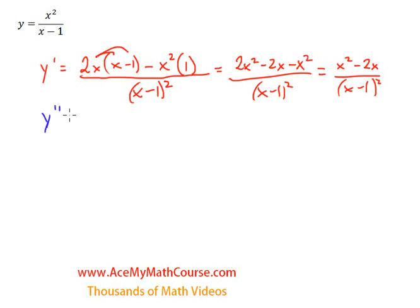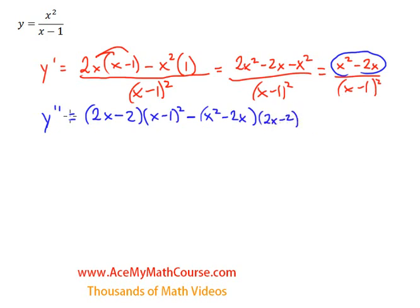y double prime is equal to, now this will be super fun, we need to take the derivative again and the derivative of the top function will be 2x minus 2 times the bottom function, so x minus 1 squared. And I'll subtract the top function times the derivative of the bottom function, which will be, I can bring down the exponent here, work the chain rule and I'll get 2x minus 2.